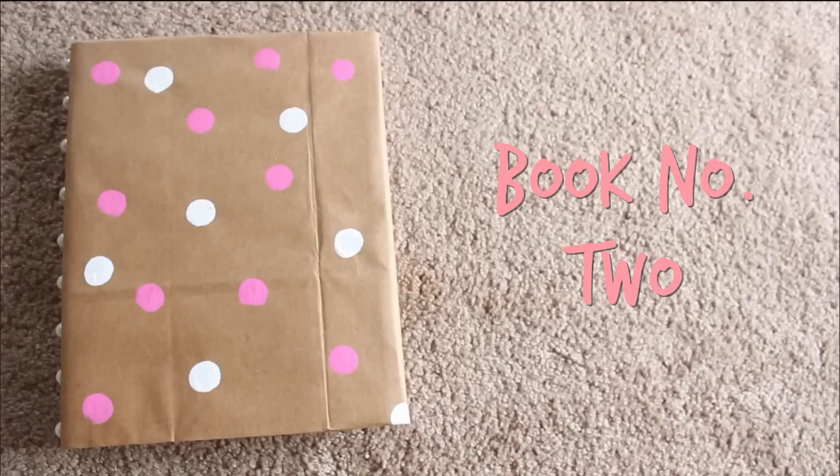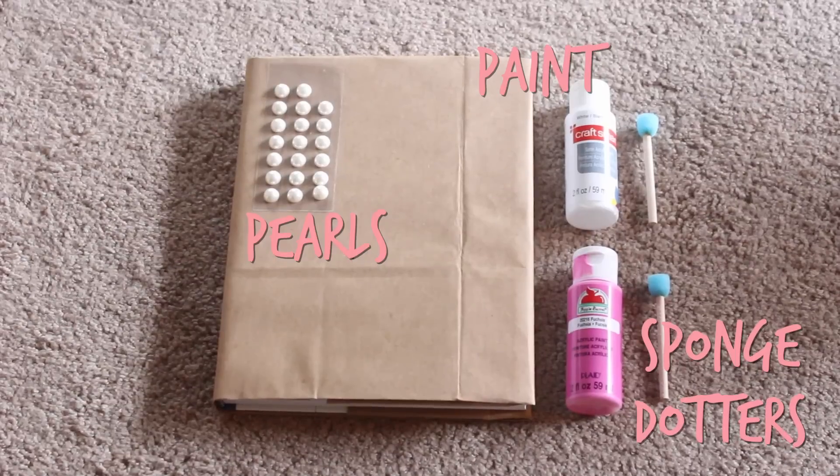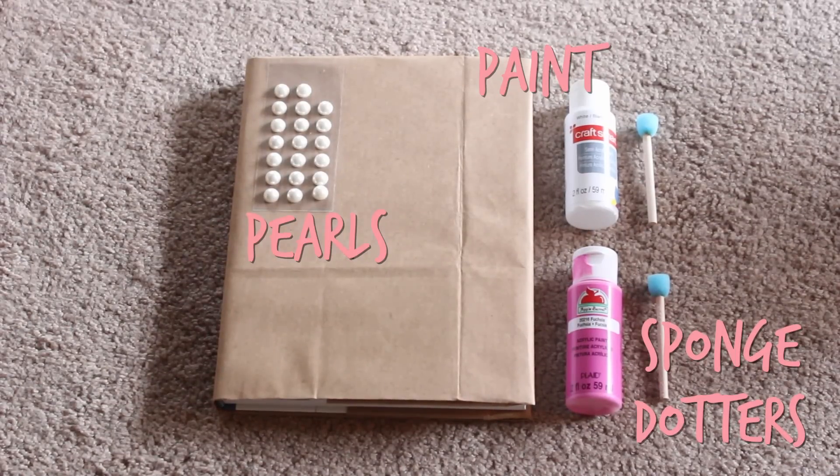So this is book cover number two and it's probably my favorite, I think. So what you're going to need is some sticky pearls, two paint colors, some sponge dotters, and once again, your covered textbook.